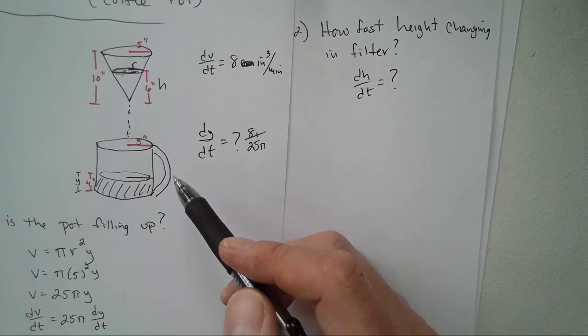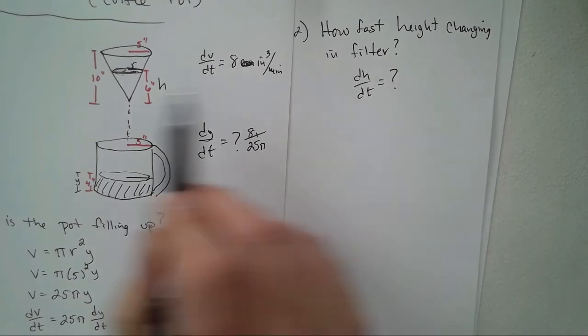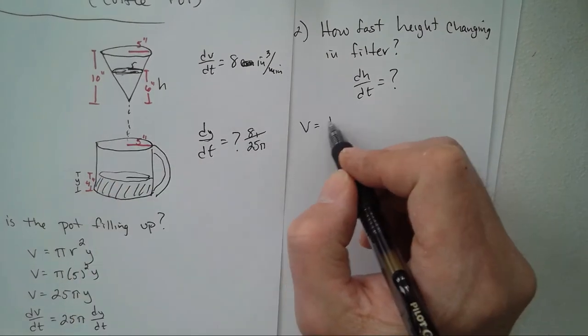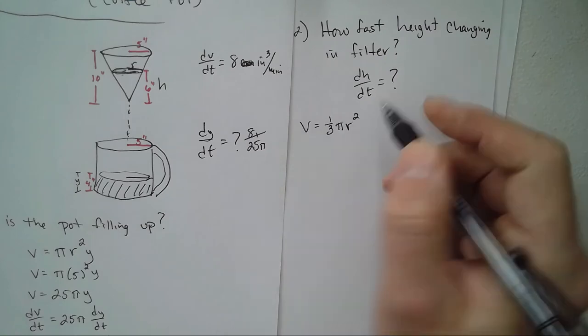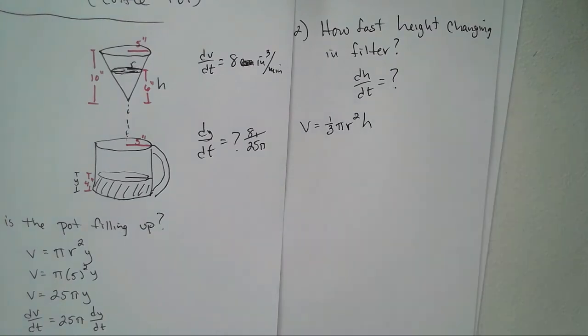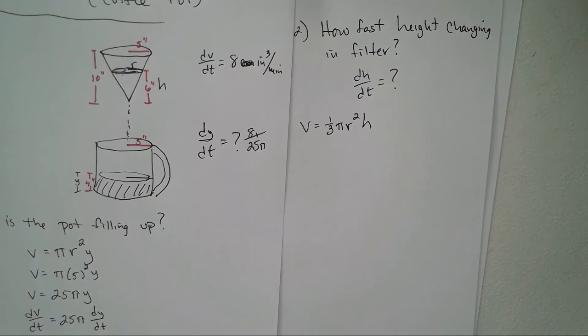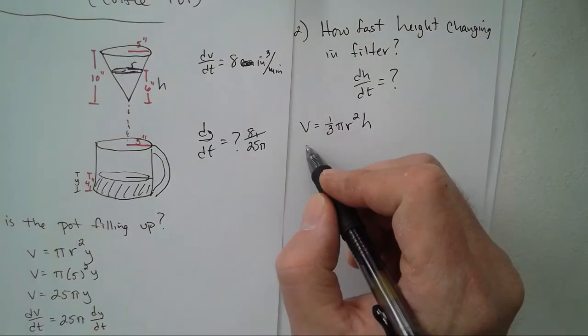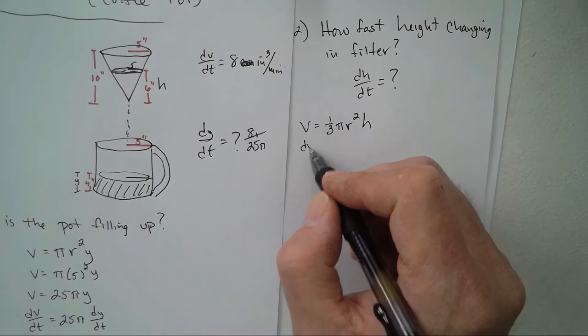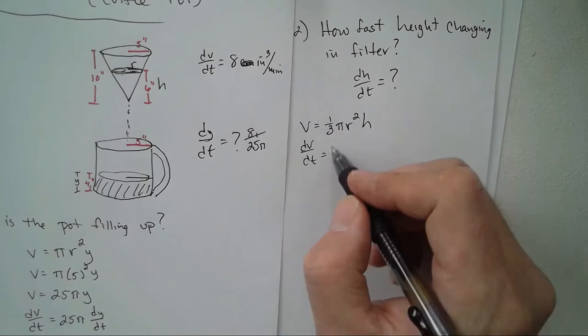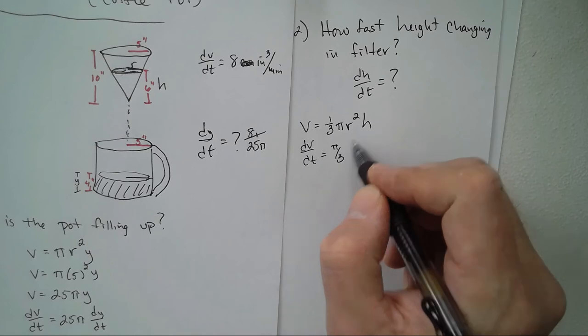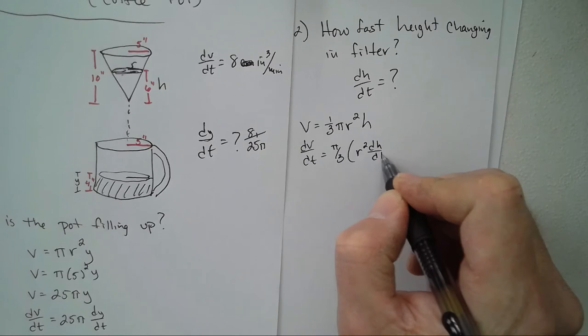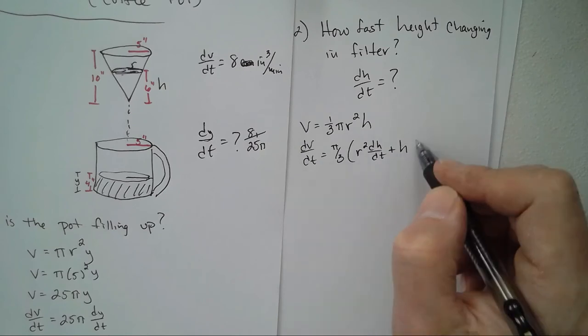Okay, so we're going to start with our volume of a cone. Volume of a cone is one-third πr² times height. Finding the derivative, it would be dV/dt equals π over 3, I'll just float r² dh/dt plus h times 2r dr/dt.